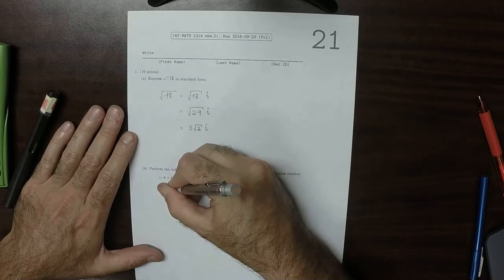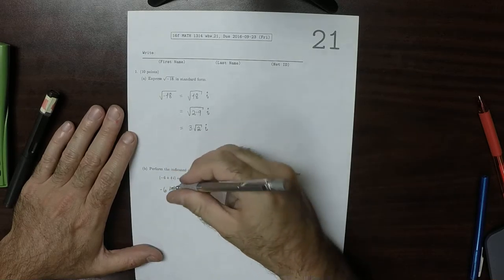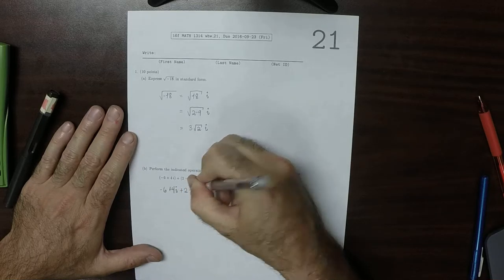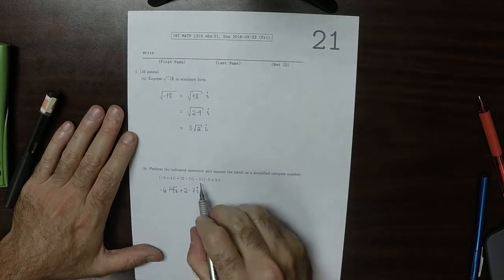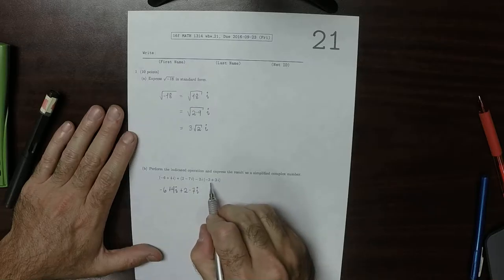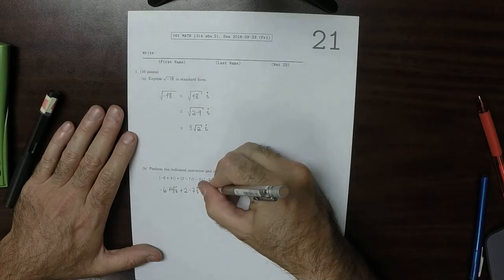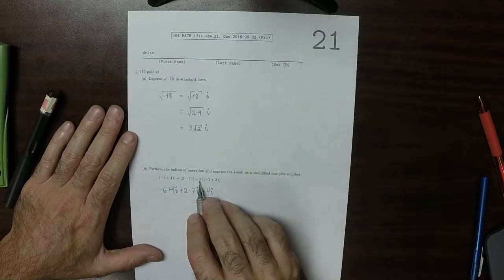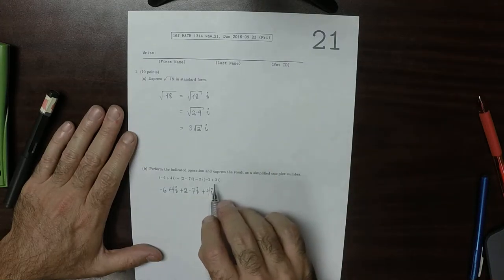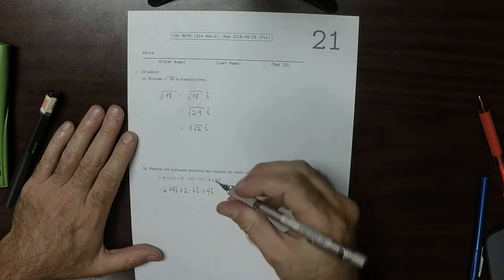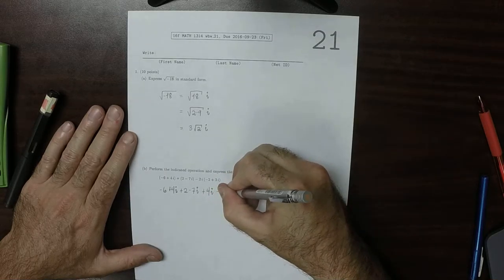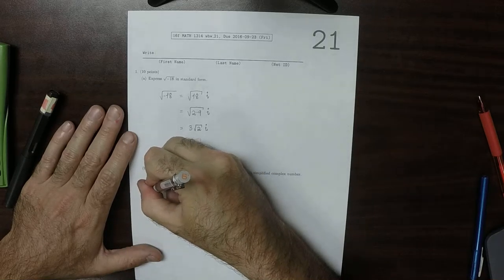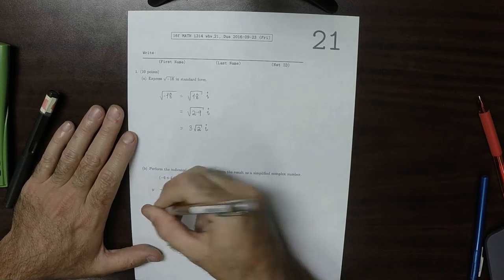So negative 6 is 4i plus 2 minus 7i. And then now I'll distribute this. So negative 2i multiplied by negative 2, that's plus 4i. And then negative 2i multiplied by 3i, that would be negative 6i squared.